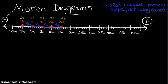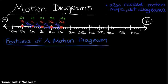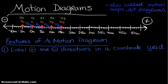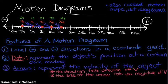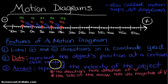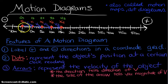Let's go over the main features of motion diagrams. First, label positive and negative directions on a coordinate grid. Second, the dots represent the object's position at a certain clock reading. Third, add velocity arrows — these represent the velocity of the object in two ways: the arrowheads show the direction of motion, and the size of the arrow tells you the magnitude of v. Looking at this number line, each velocity vector is five units long, so the velocity is five meters per second for all of them.